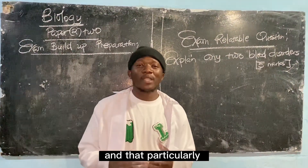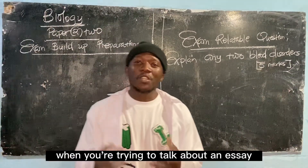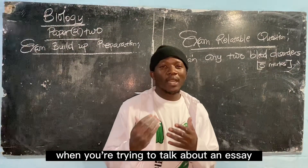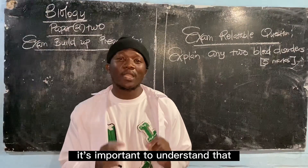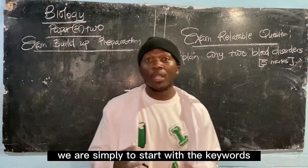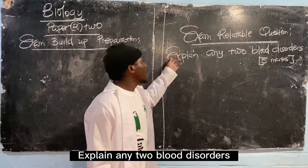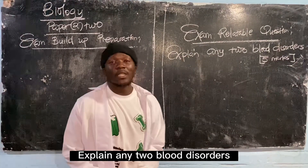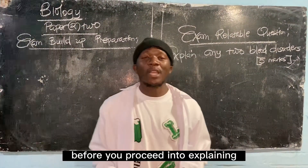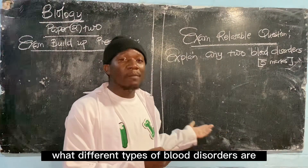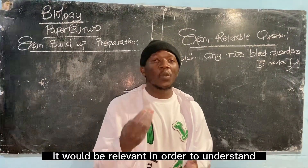In this discussion we're going to consider biology chapter 2 section B, and that particularly is supposed to be understood as an essay part. When you're trying to write an essay, it's important to understand that we simply start with the keywords. The question says: explain two blood disorders.